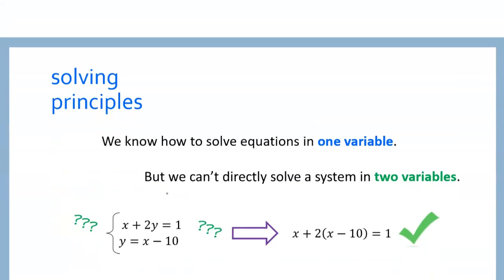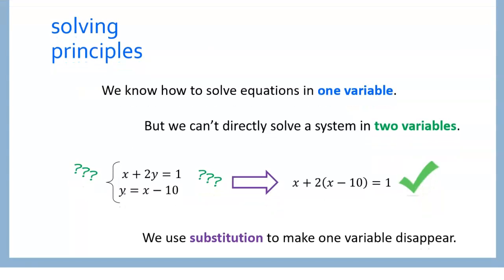What we have to do is a step like substitution. We take this y value here — same as this y value up here, same as this on the other side of the equal sign — and we substitute it in right there. What happens when we do that is we get x plus 2 times x minus 10, equals 1. And you'll see we only have one variable now — we have an x and an x.